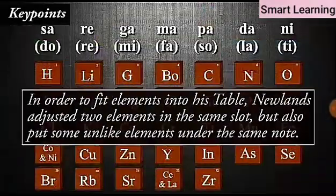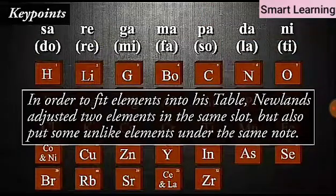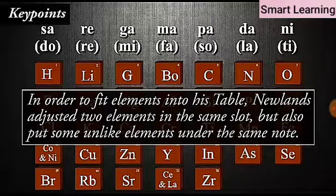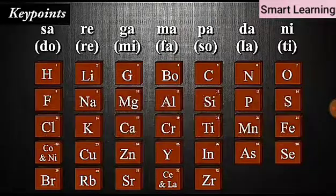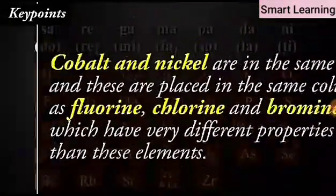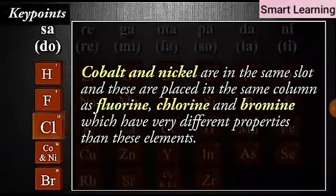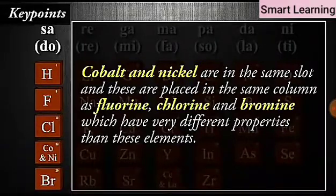In order to fit elements into his table, Newlands adjusted two elements in the same slot but also put some unlike elements under the same node. If you look at this table, you will find that cobalt and nickel are in the same slot and these are placed in the same column as fluorine, chlorine and bromine which have very different properties than these elements.